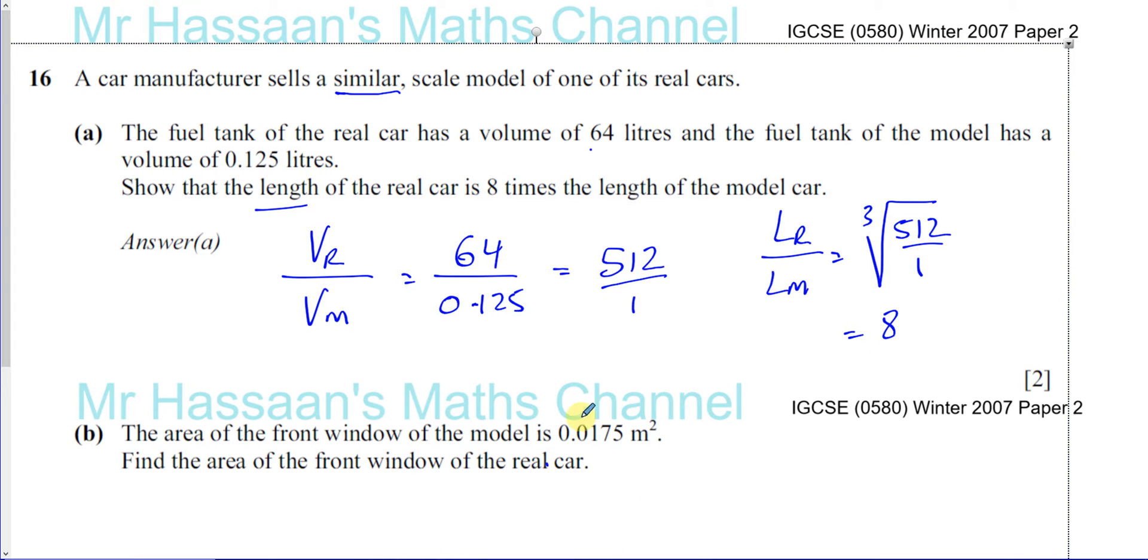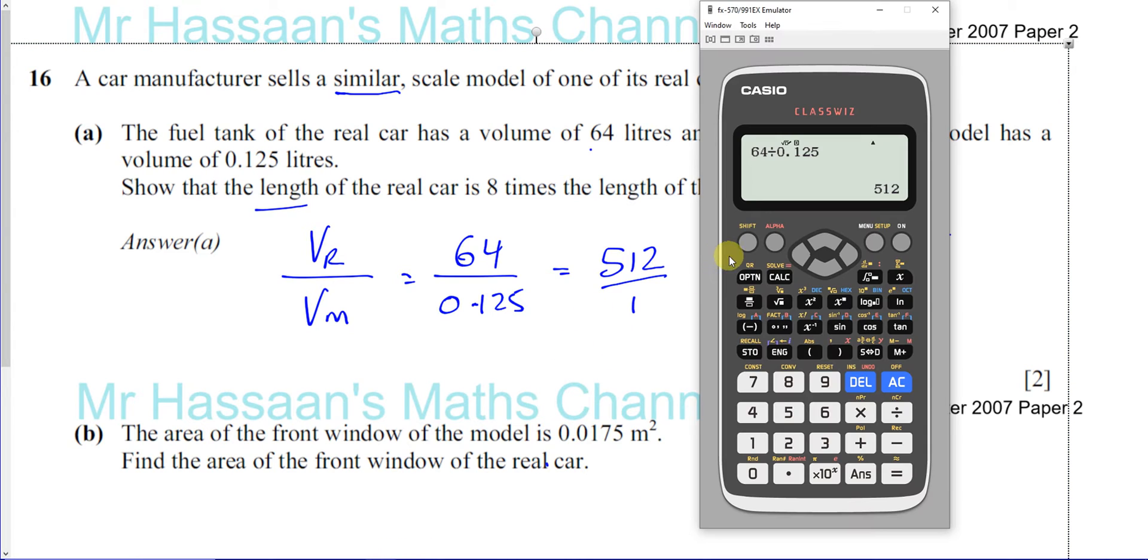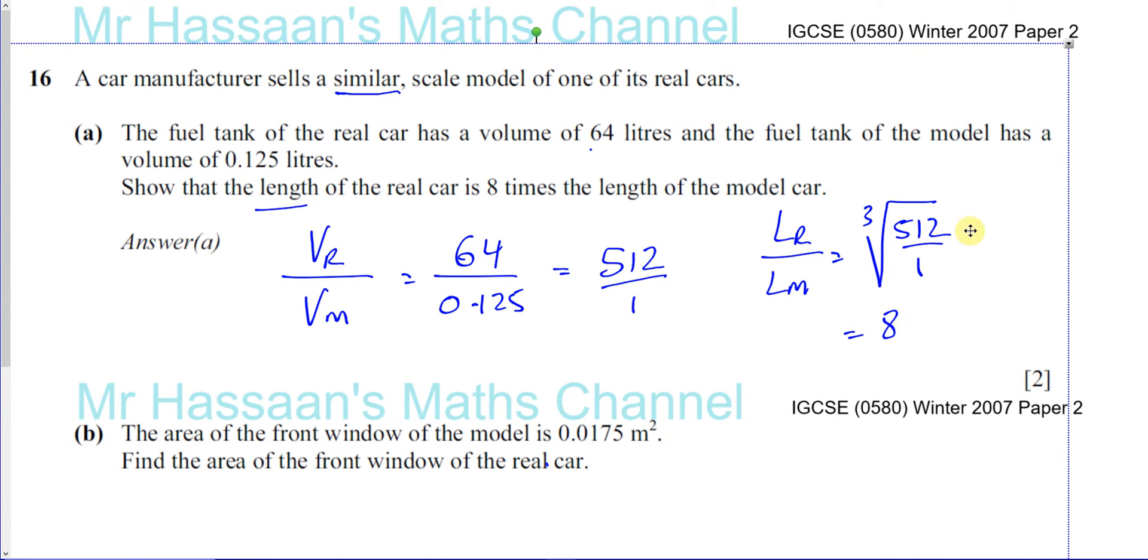It's just to make sure. You can say the cube root of our answer, the cube root of 512 gives us 8. So we can see that that's proved it. That's enough for you to show your proof. The ratio of the volume is 512. The ratio of the length is the cube root of the ratio of the volumes. Therefore we can see that the ratio of the lengths is 8.